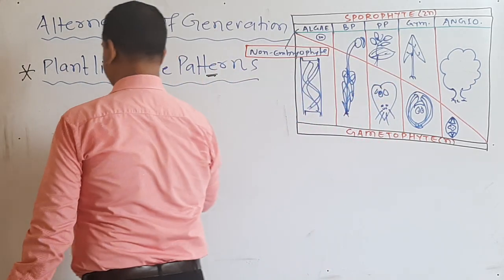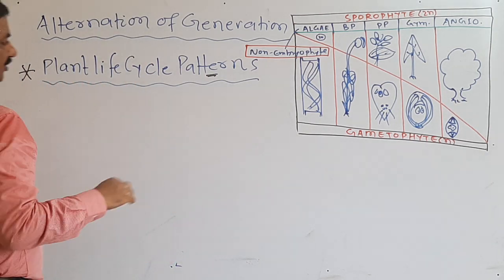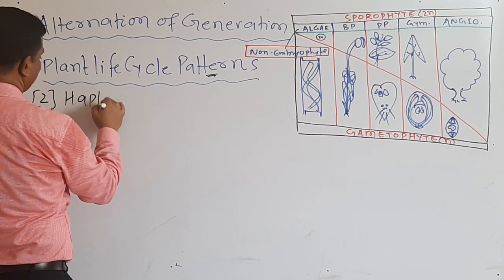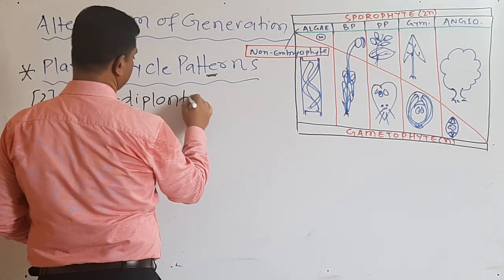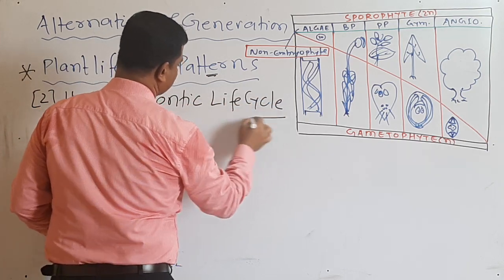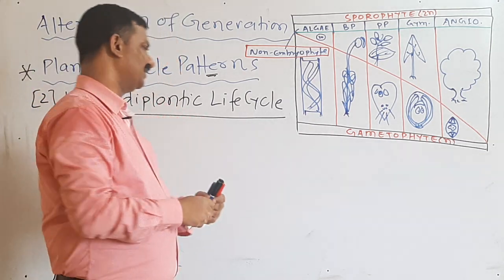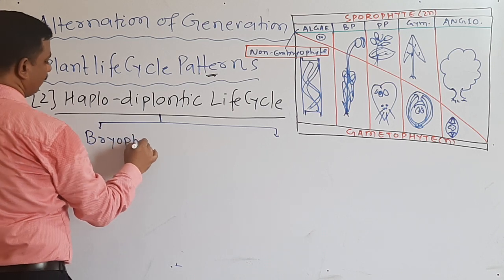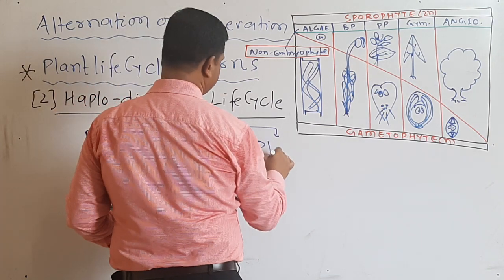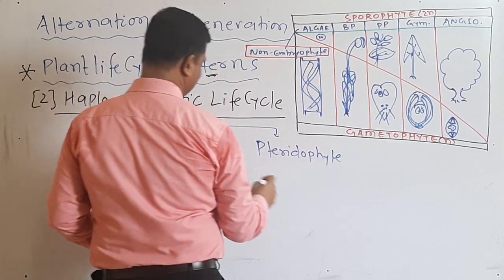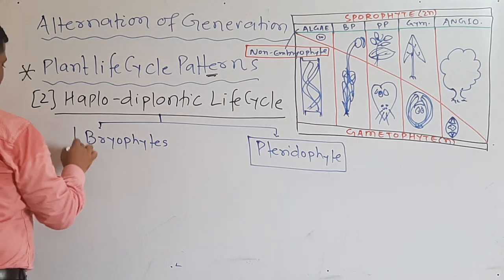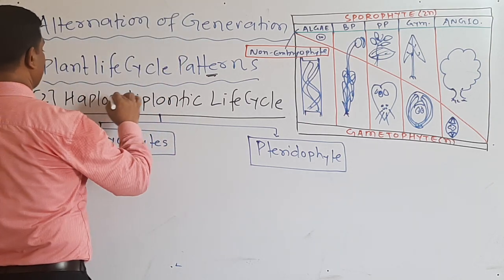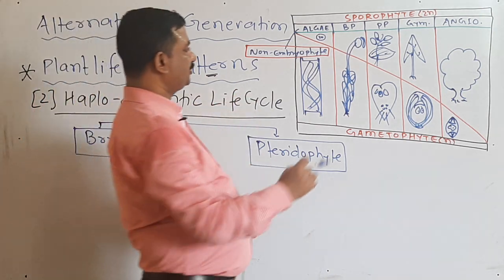The second type we have is the haplodiplontic life cycle. It is found in two important groups: all members of bryophytes and all members of pteridophytes. There is no exception in algae — we will conclude at last — but in bryophytes there is no confusion, no exception. They are unexceptionally haplodiplontic life cycle.